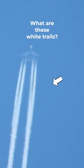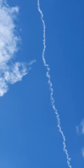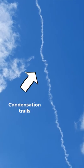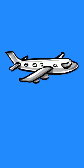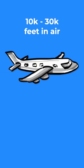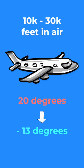Have you ever wondered what are the white trails an aircraft leaves behind while flying? These white trails are actually called condensation trails. When aircrafts reach a flying altitude between 10 and 30,000 feet, temperatures can vary widely between 20 and minus 13 degrees.